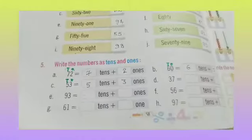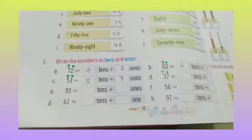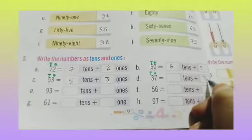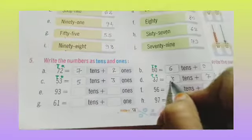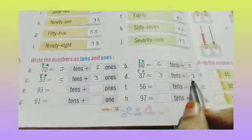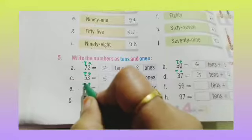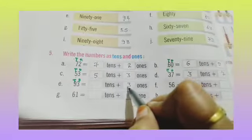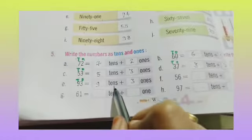37 — ones and tens. 7 at the ones place and 3 at the tens place. So 3 tens and 7 ones. Part E: 93 — ones and tens. 3 at the ones place and 9 at the tens place. So 9 tens plus 3 ones.